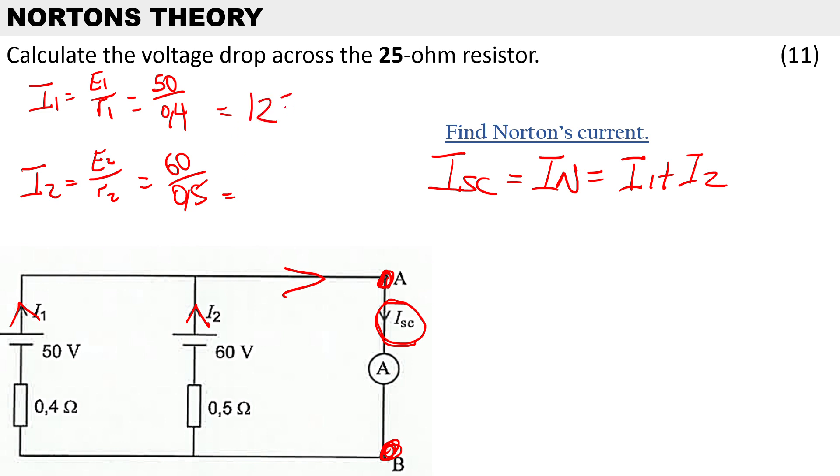So we've got 125 amps and I2 is going to be 120 amps. All we have to do is add that together: 125 plus 120, and that will give us 245 amps.